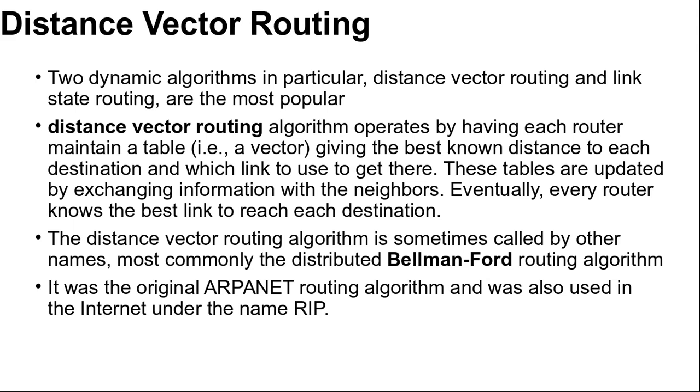Computer networks generally use dynamic routing algorithms that are more complex than flooding, but more efficient because they find shortest path for the current topology. There are two dynamic algorithms. First, Distance Vector Routing and Second, Link State Routing.